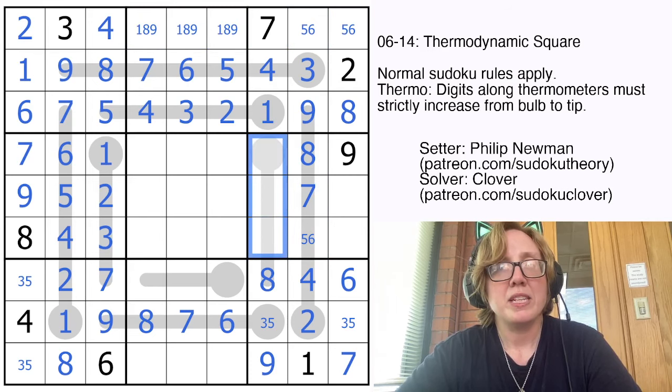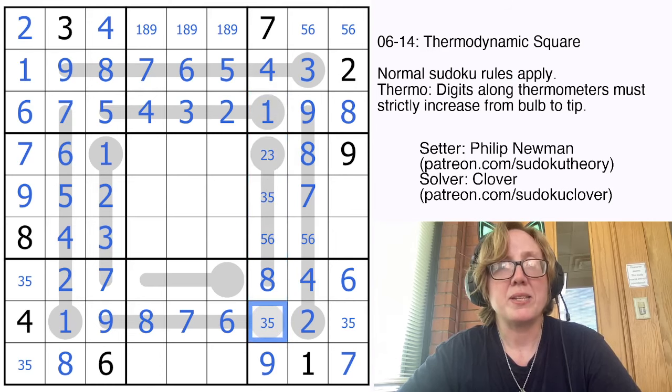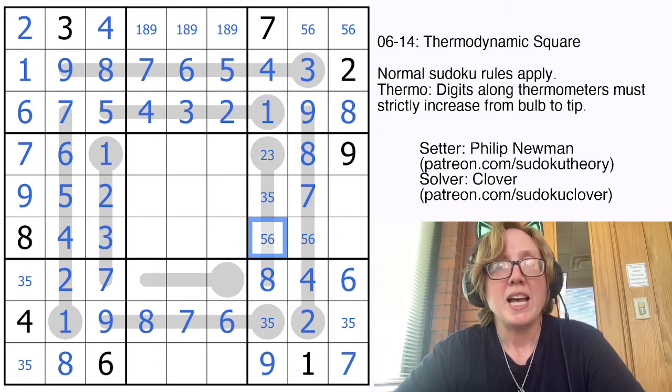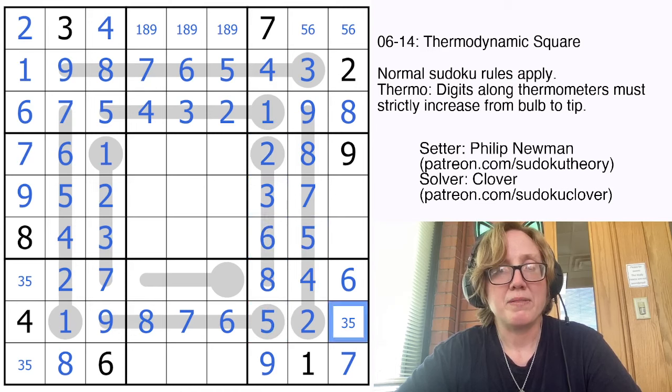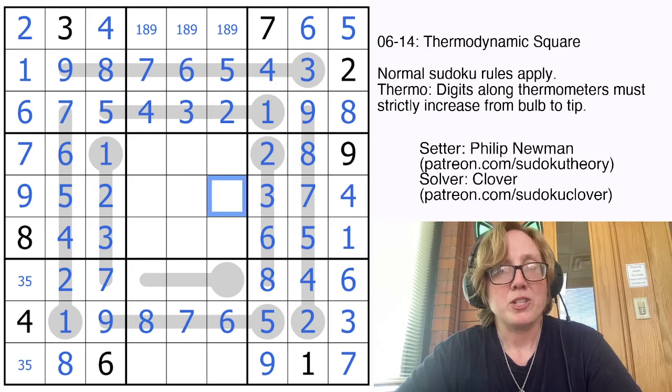So now vertically here, this needs to be 2 or 3. This is 3 or 5, and this is 5 or 6 because again, I have only one degree of freedom. Now I can look at this 5, 6 pair and say therefore that's a 3 and a 2. That tells me that's a 5 and resolves this 5, 6 pair entirely. Now this 5 gives me a 6 here and a 5. These will be a 1 and a 4 to finish the region.